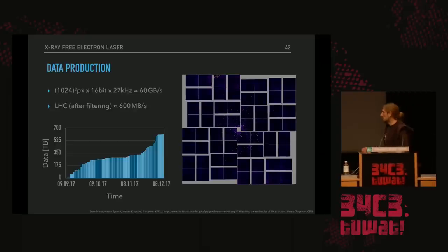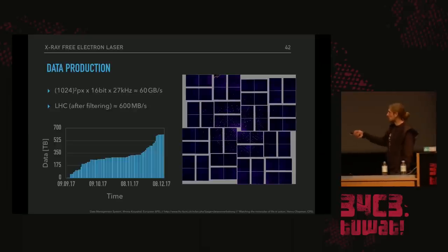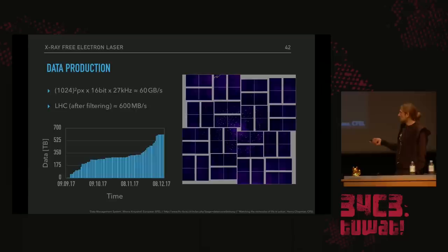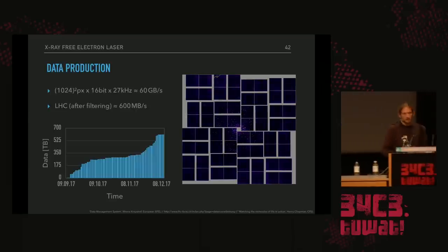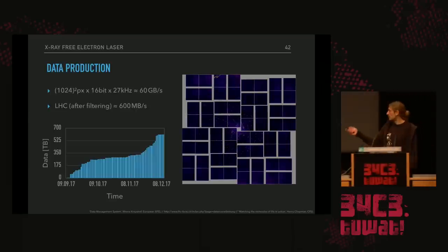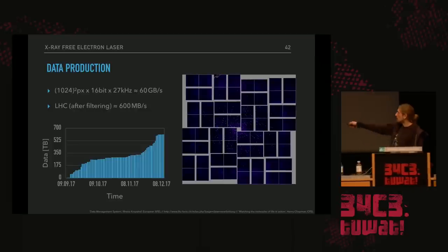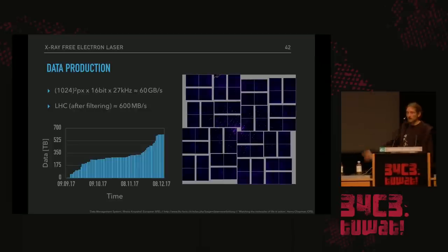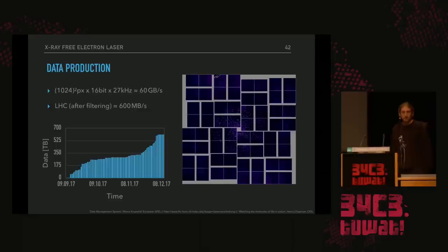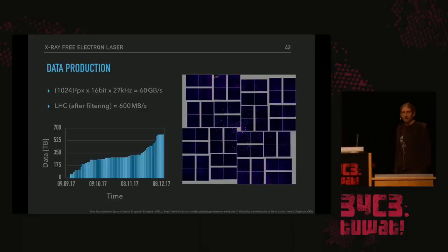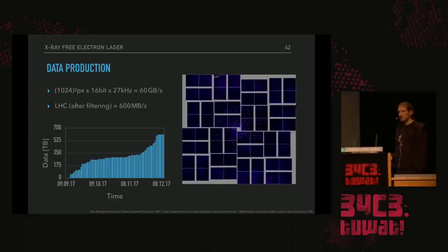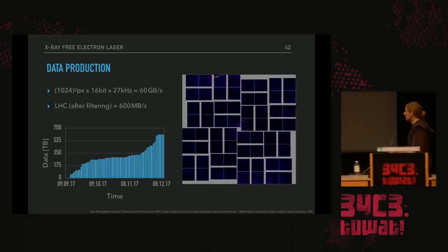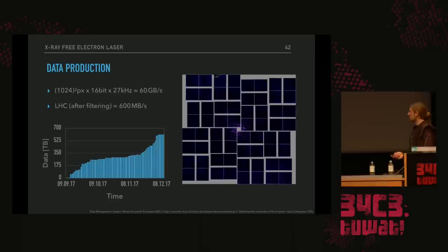Another interesting number is the data production rate. Just talking about the X-ray detector: we have about 1 megapixel with a resolution of 16-bit, and we want to record this 27,000 times per second. That means 60 gigabytes per second. Just for comparison, the LHC after filtering has about 600 megabytes per second. We need very sophisticated trigger levels to deal with this amount of data. The amount of stored data in the first weeks of operation of the European XFEL was hundreds of terabytes, and the machine was working with less than 10% of its full capacity — so we are talking about petabytes.